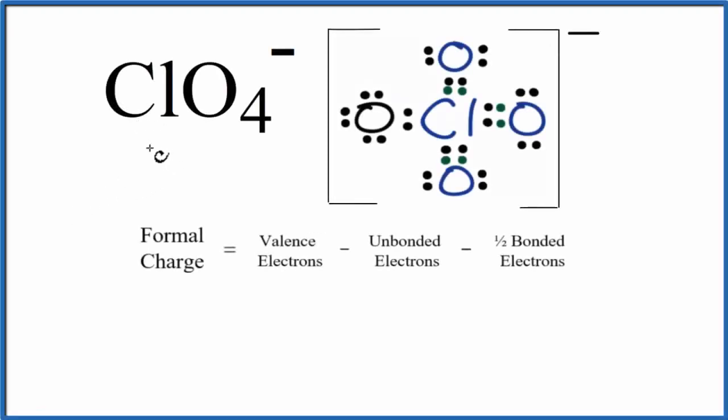To find the formal charges for each element in ClO4-, the perchlorate ion, we use this Lewis structure and this formula.